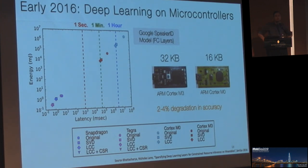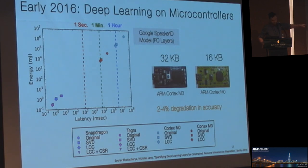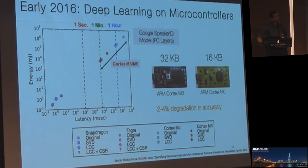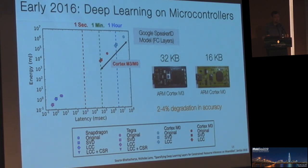ARM has since built an incredible machine learning team and is pushing this even further. These were fully preliminary results — the figure shows latency and energy on a log scale, moving many orders of magnitude. It still takes about a minute for the speaker ID model to get a result, so this was really proof of concept: you can run it on these devices. Back in 2016, we had a long way to go. That's where the community has been coming from for the last five years.